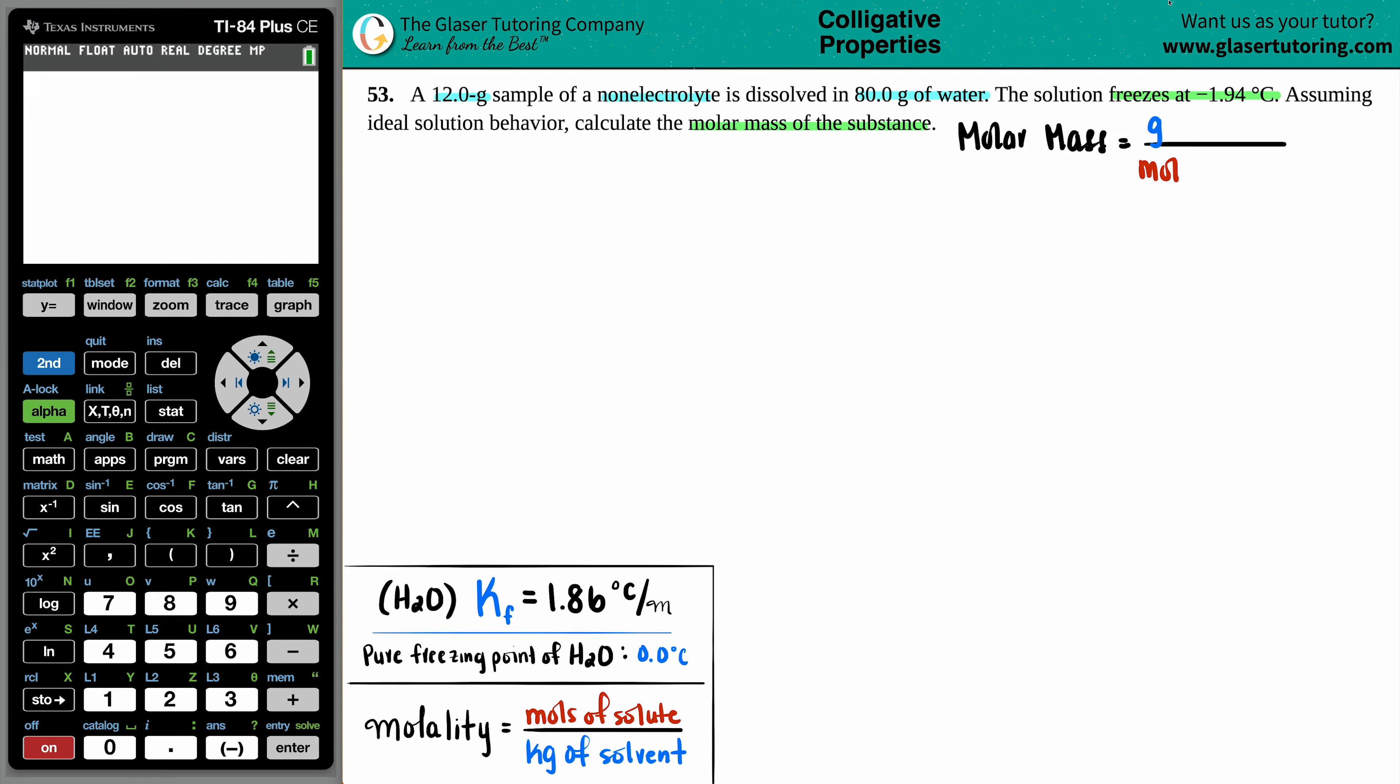Okay, so maybe I'll just say, let's just assume it's a compound. So we're going to take the grams of that compound, that substance, and divide it by the moles.